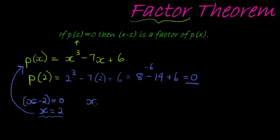So, if I write it in division transformation, x to the power of 3 minus 7x plus 6 is equal to, and if I divided this with x minus 2, I will get a quotient.